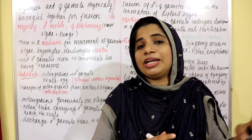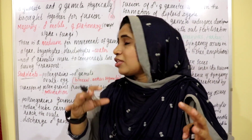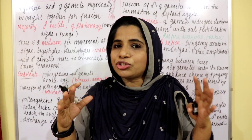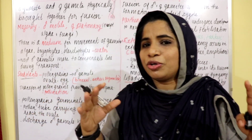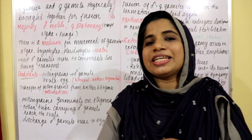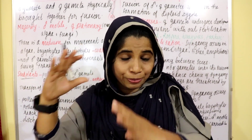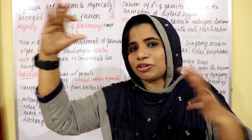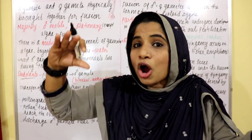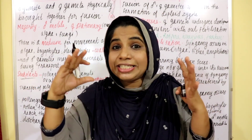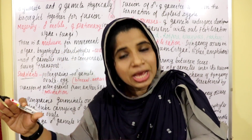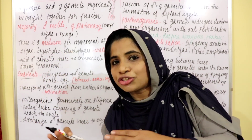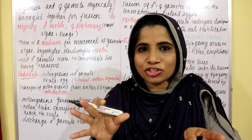Water is the medium used to bring the gametes together. In seed plants, the male gametes are produced inside the pollen grains. The transfer of pollen grains from the anther to the stigma is known as pollination. On the stigma, the pollen grains germinate and produce a pollen tube, which carries the two male gametes into the ovule and discharges them to the egg.